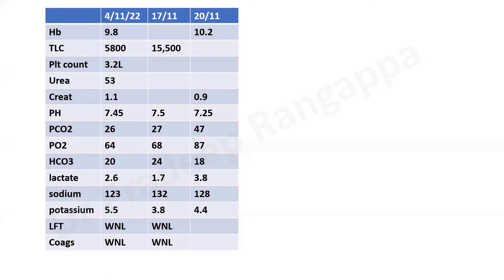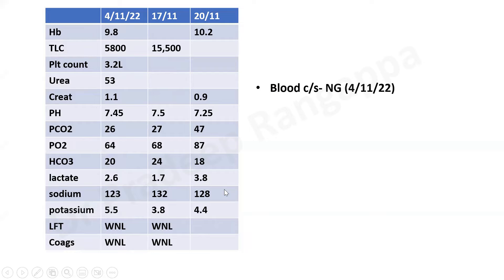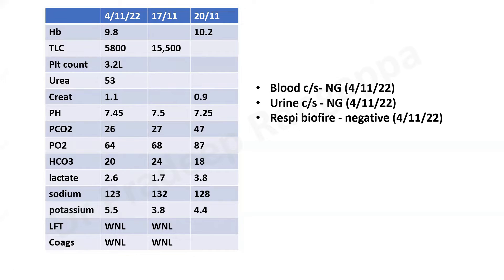This is how we approached the investigations. Routine labs showed a little anemia, low initial total count that went up, but pretty much everything was reasonably normal — no sinister problems. LFTs were normal, coags were normal. Blood cultures were negative, urine culture was negative. We did multiplex PCR to look for exotic viral infections — COVID was negative, respiratory BioFire panel was negative. CRP was high.